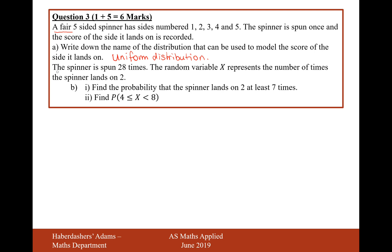Moving on to the next part, the spinner is spun 28 times. The random variable x represents the number of times the spinner lands on the number 2. So what we're going to say here is that success is to land on 2, failure is to land on anything else.